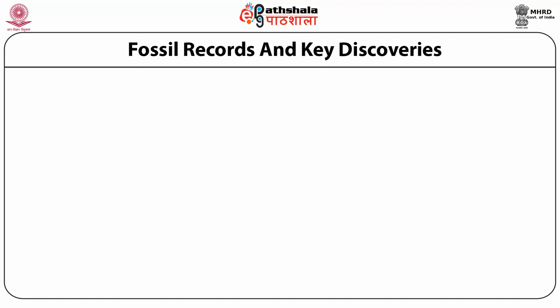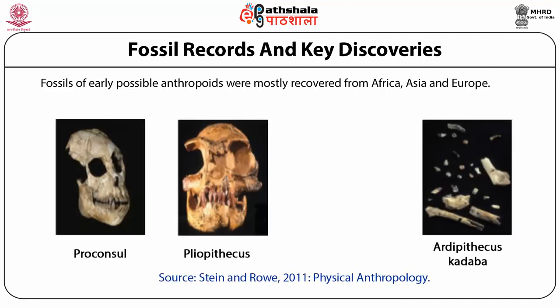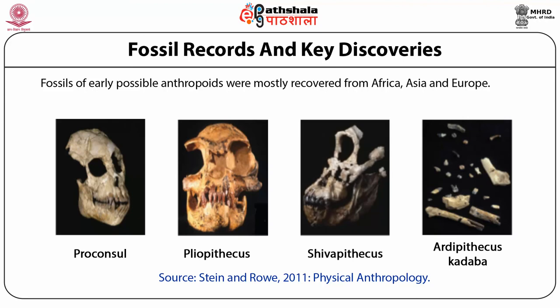Now let's review the fossil record and key discoveries. The fossils of early possible anthropoids were mostly recovered from Africa, Asia, and Europe. One of the richest sites yielding late Eocene and early Oligocene anthropoid fossils is Fayum in Egypt. The Miocene era fossils include Triopithecus, Pliopithecus, Proconsul, and Sivapithecus. The first representative fossil was discovered from Saint-Gaudens in 1956 in France. Studies on available cranial and post-cranial structures suggest their affinities with living apes.